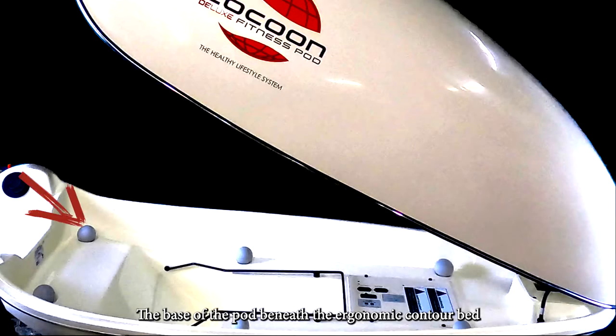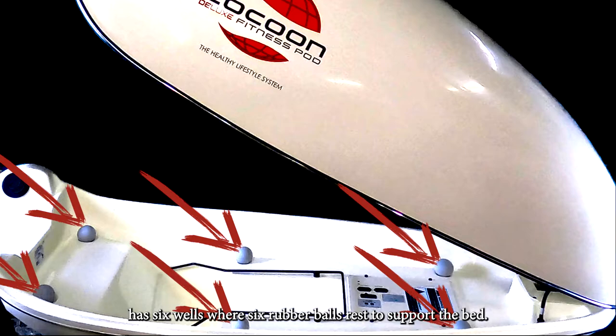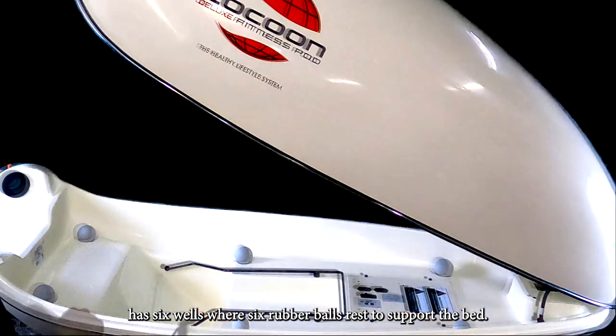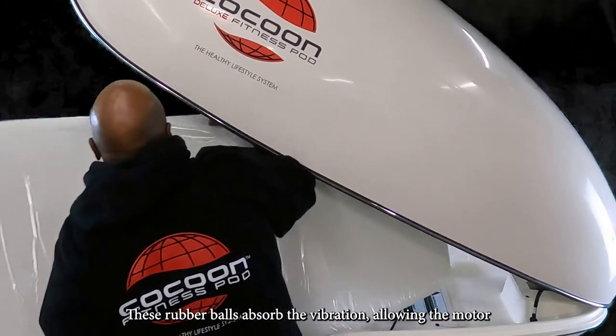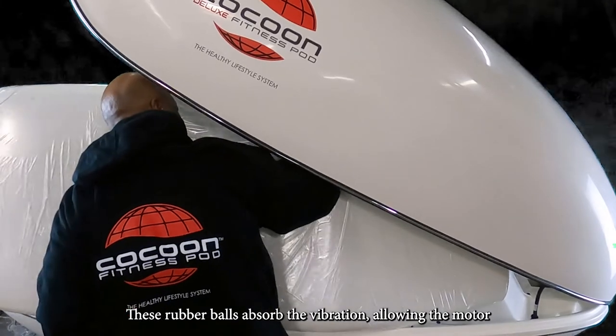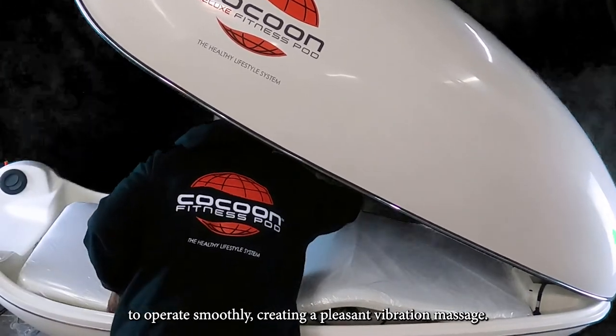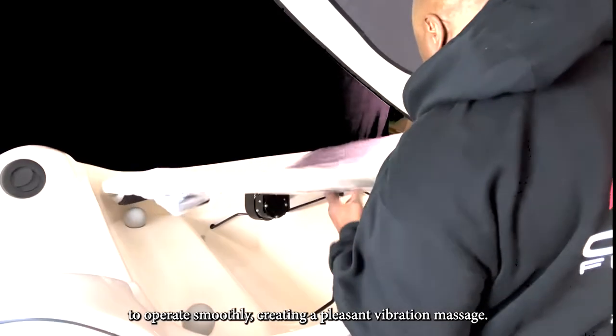The base of the pod beneath the ergonomic contour bed has six wells where six rubber balls rest to support the bed. These rubber balls absorb the vibration, allowing the motor to operate smoothly, creating a pleasant vibration massage.